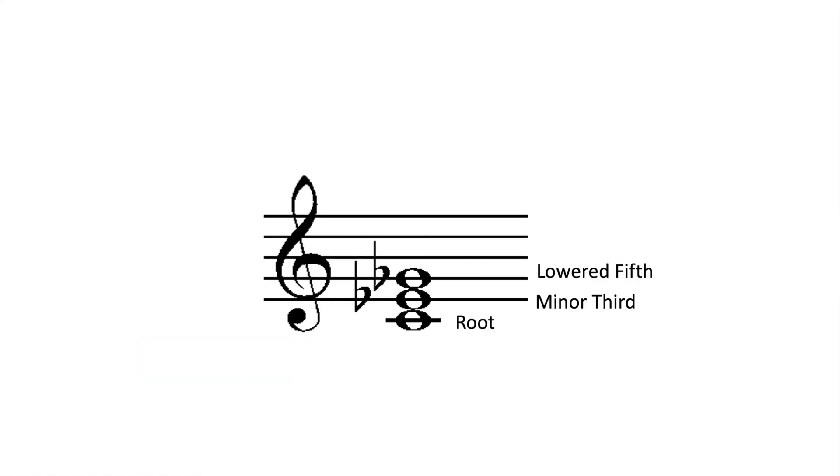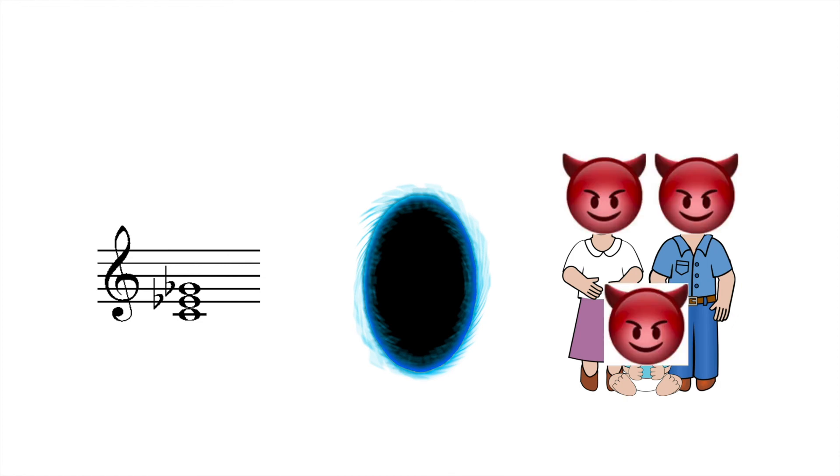The diminished triad is a minor triad with a chromatically lowered third. The playing of the diminished chord unleashes a portal that leads to an alternate reality, where everyone you know and love is evil.